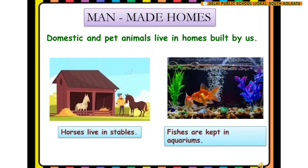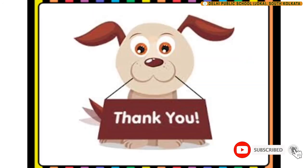Some more examples of animals that stay in man-made homes: horses live in stables, and fishes are kept in aquariums. I hope you all understood the lesson. Thank you, children.